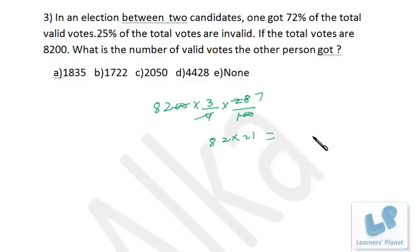82 into 22, so that's 1640 plus 82, that is 1722. That's your correct answer. I'm sure you are clear.